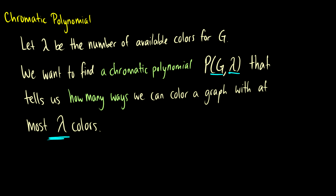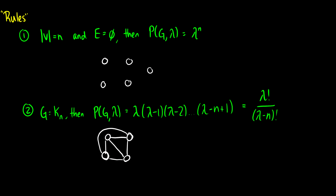Let's look at some examples. If a graph has n vertices and no edges, the chromatic polynomial is lambda to the n. Each vertex has no restrictions, so it can be colored any of lambda colors independently. With 5 vertices and no edges, the answer is lambda to the 5. For complete graphs, the first vertex has lambda choices, the next has lambda minus one, then lambda minus two, and so on — giving lambda factorial over (lambda minus n) factorial.